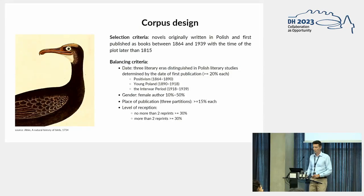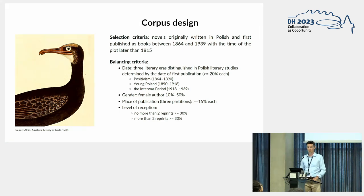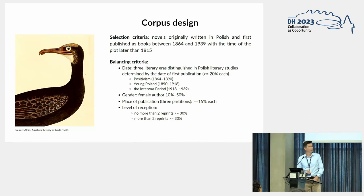We brought together novels originally written in Polish and first published as a book between 1864 and 1939. For the balancing criteria we include date, gender, level of reception, and place of publication. I want to stop at that moment because the place of publication is quite tricky.